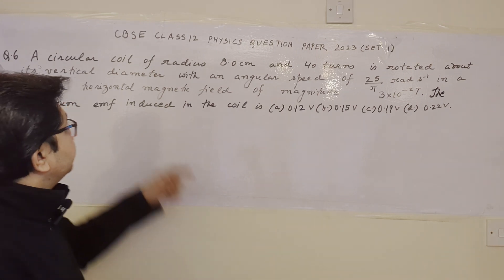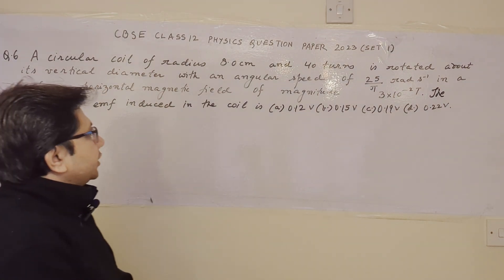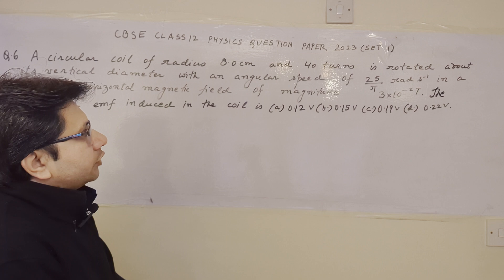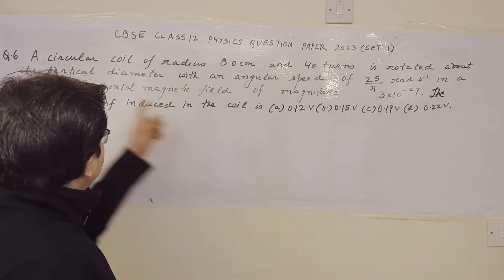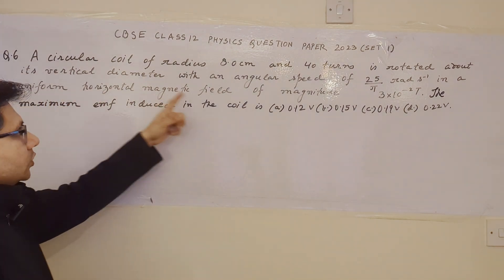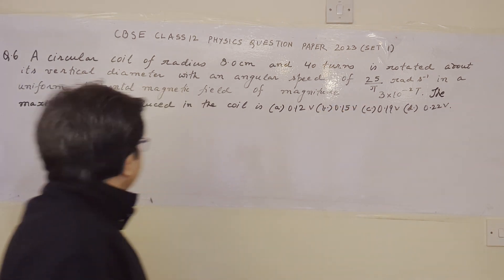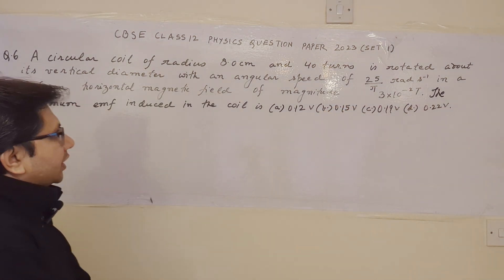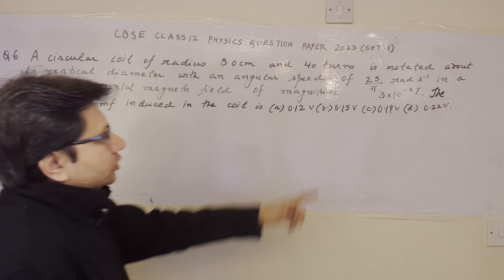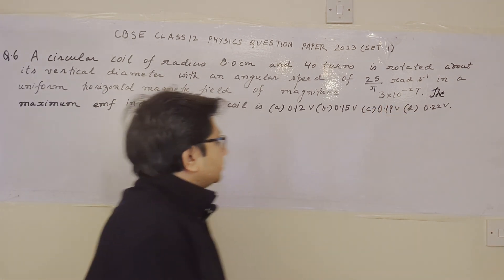Hello students, the question is, a circular coil of radius 8 cm and 40 turns is rotated about its vertical diameter with an angular speed of 25 upon pi radians per second in a uniform horizontal magnetic field of magnitude 3 into 10 to power minus 2 tesla.